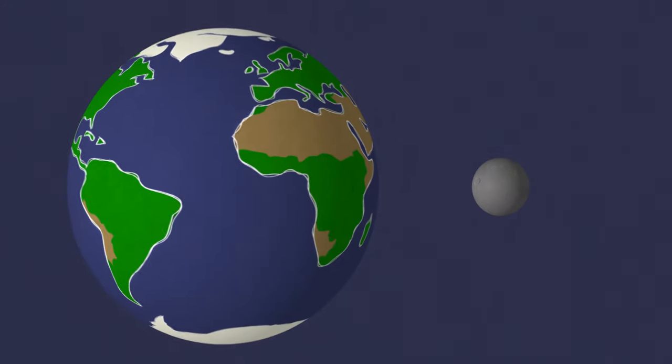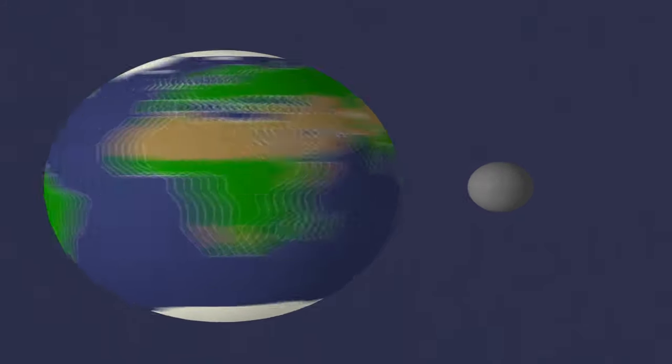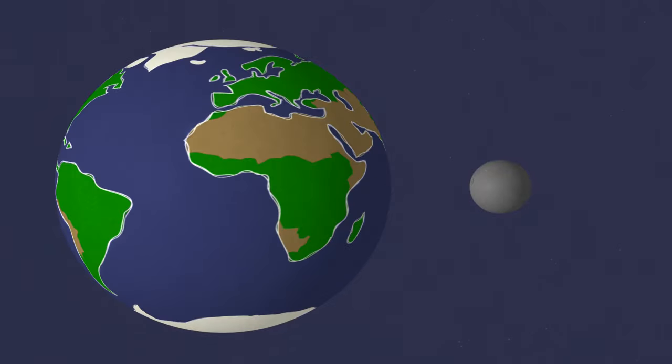Dwarf planets are a lot like regular planets. They both have enough mass and gravity to be nearly round, unlike odd-shaped asteroids.